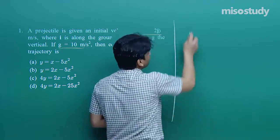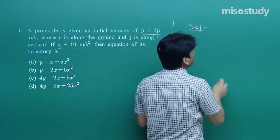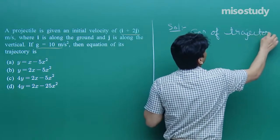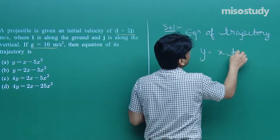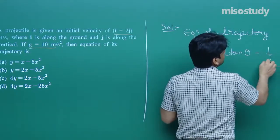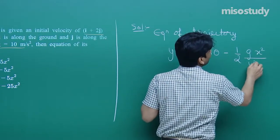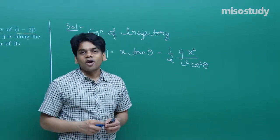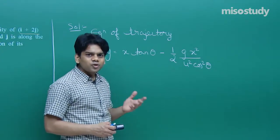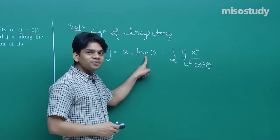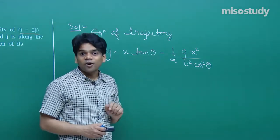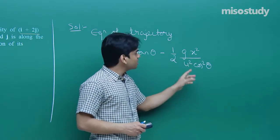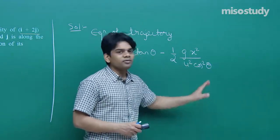The basic equation of trajectory is: y = x·tan θ − (g·x²) / (2·u²·cos²θ). Here, y and x are variables along the vertical and horizontal respectively. θ is the initial angle of projection, g is acceleration due to gravity, x is the horizontal variable, u is the initial speed, and cos θ is evaluated from the known value of θ.